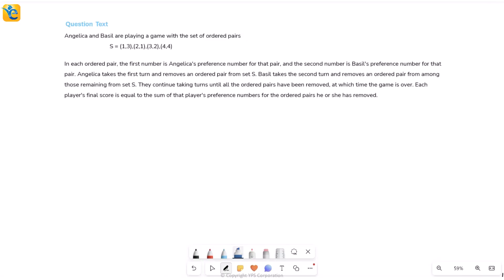Here's a relatively simple question. This is about two people who are playing a game, Angelica and Basil. I'll just call them A and B here. They are playing a game and this game involves a certain set of ordered pairs. And these are the ordered pairs. There are four of these as you see.